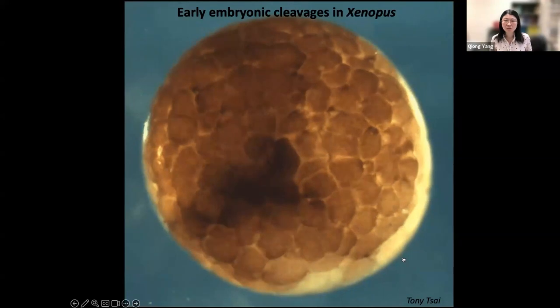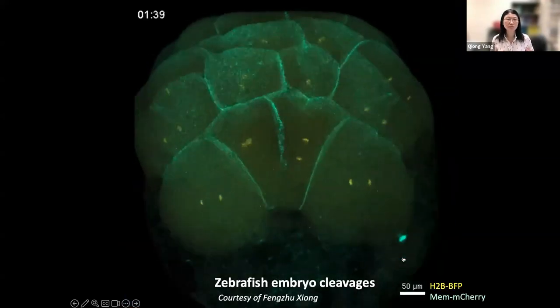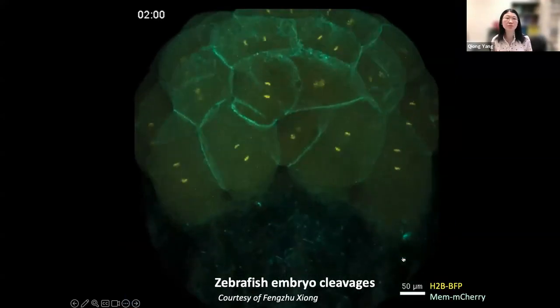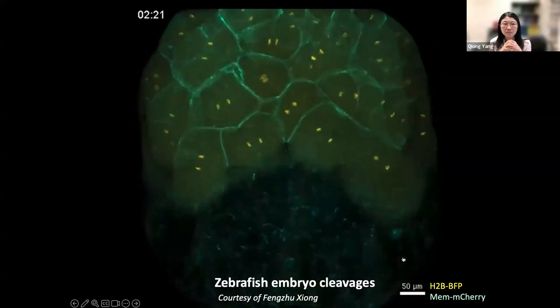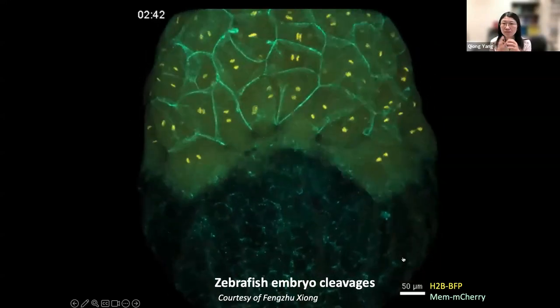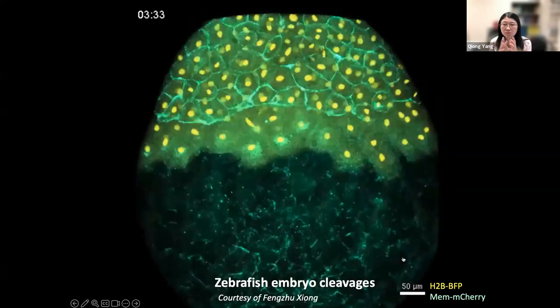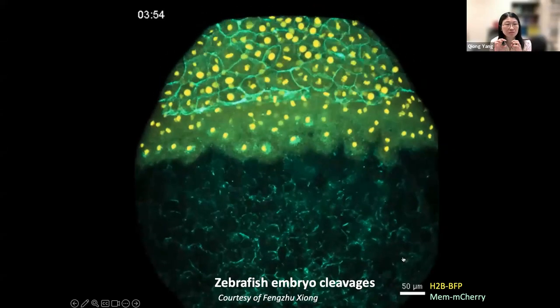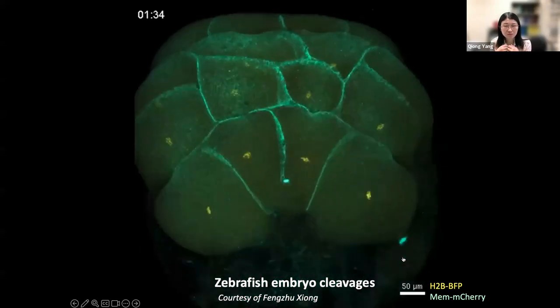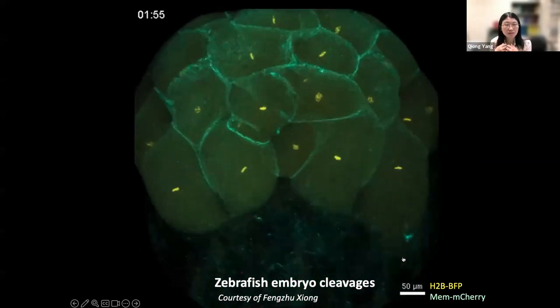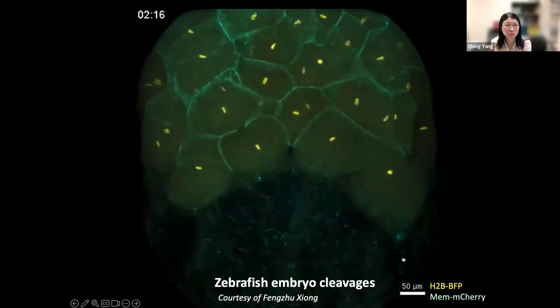The same process is well conserved across different species. Here I'm showing you a zebrafish embryo. Because it's transparent, you could label nuclei and membrane with fluorescence proteins. As you see, the cell divisions are highly synchronized, and they also coordinate downstream events such as nuclei division.